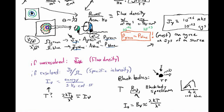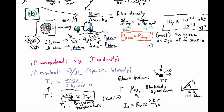You could measure brightness temperature in units like Kelvin. Using this formula, where k is Boltzmann's constant and lambda is the wavelength you're observing at, you can equate the brightness temperature of something with the specific intensity coming from it. So you can measure the brightness temperature of anything on the sky.